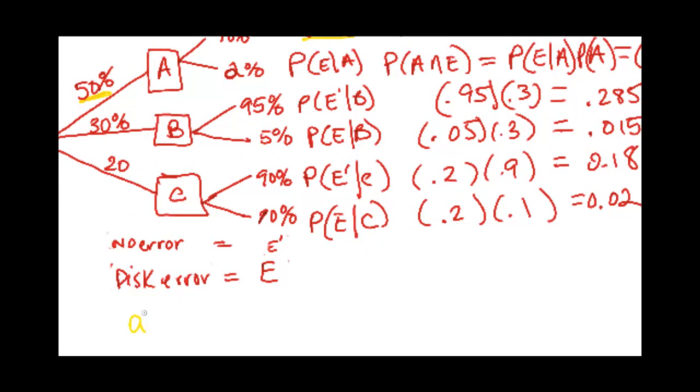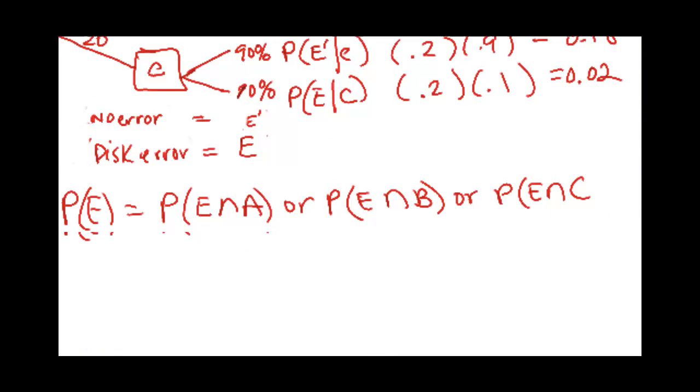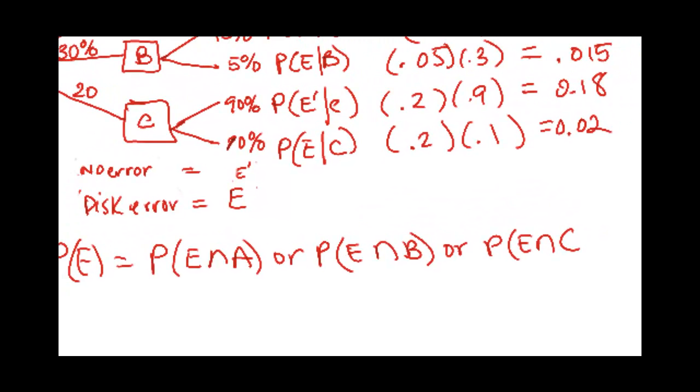what is the probability of an error of a CD? So probability of error would be probability of error and A or probability of error and B or probability of error and C. So in this case, all these ors can be replaced with plus signs.